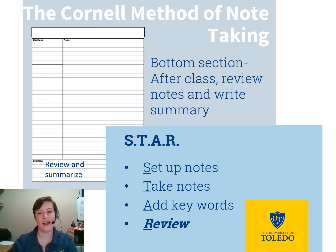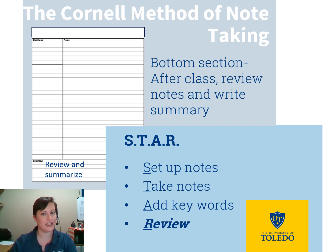The final step in the Cornell method of note-taking is to review your notes and create a summary, which is written in the bottom section of your paper. This should be done after class and after completing the keywords and questions. Ideally, you review and summarize within the hour after you took the initial notes. This section can serve as a great way to quickly flip through information and review major concepts.